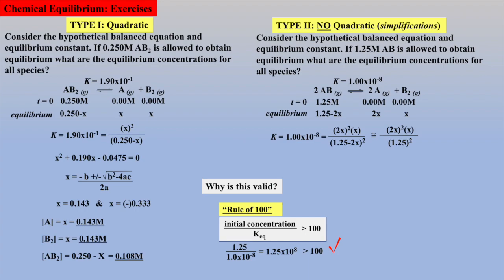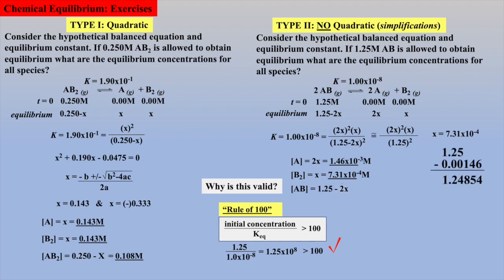You may be asking why this simplifying assumption is valid at all. To answer this, let's go back and solve for x and the final equilibrium concentrations for products. To calculate the equilibrium concentration of reactant AB, we subtract 2x. Remember your sig fig rule for addition and subtraction: the number with the most uncertainty must be reflected in your final answer. Here, the 1.25 molar value is accurate to the hundredths place, and the change is accurate to the hundred-thousandths place. Thus, we round the answer to the hundredths place, which gives 1.25 — the same value we started with — clearly demonstrating that the change is negligible and our assumption was valid.